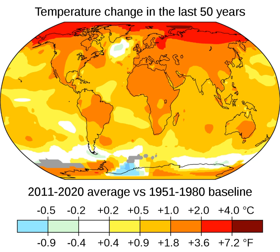Nature and wildlife: recent warming has driven many terrestrial and freshwater species poleward and towards higher altitudes. Higher atmospheric CO2 levels and an extended growing season have resulted in global greening. However, heat waves and drought have reduced ecosystem productivity in some regions. The future balance of these opposing effects is unclear. Climate change has contributed to the expansion of drier climate zones, such as the expansion of deserts in the subtropics. The size and speed of global warming is making abrupt changes in ecosystems more likely. Overall, it is expected that climate change will result in the extinction of many species.